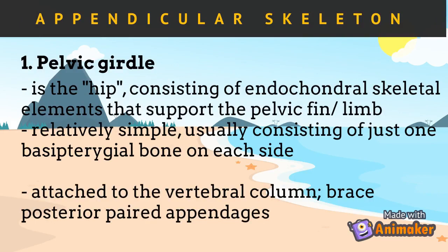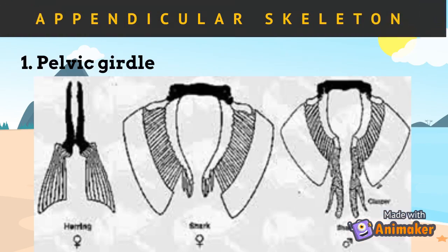The pelvic girdle in fish consists of endochondral skeletal elements that support the pelvic fin or limb. It is relatively simple, usually consisting of just one basipterygial bone on each side. It is attached to the vertebral column and braces the posterior paired appendages. This figure shows the different structures of pelvic girdles in fish.